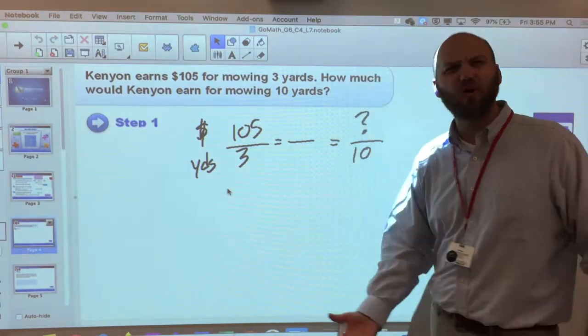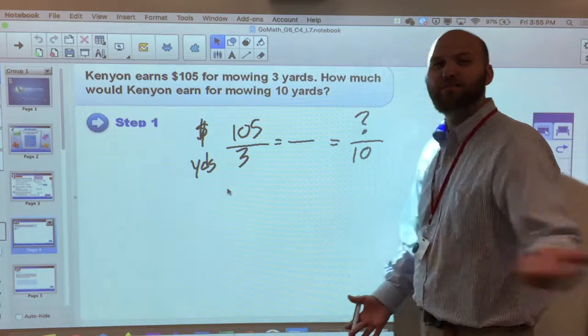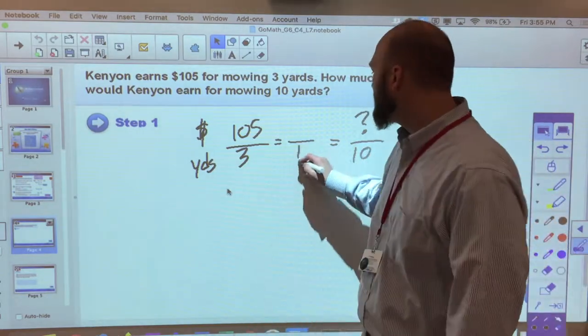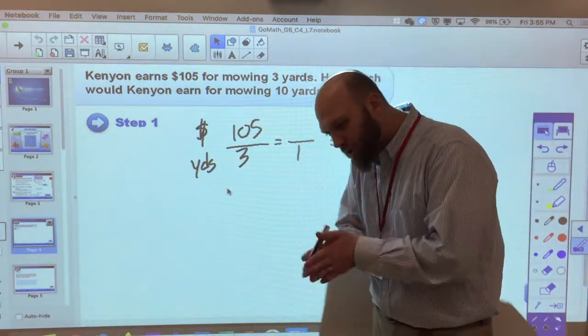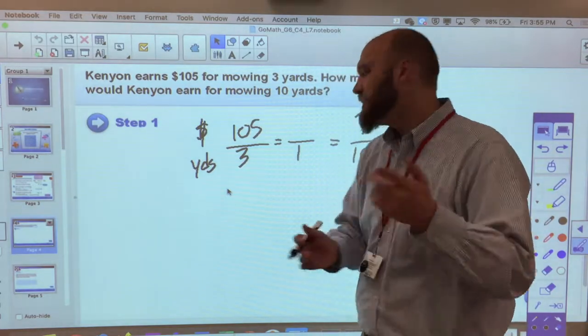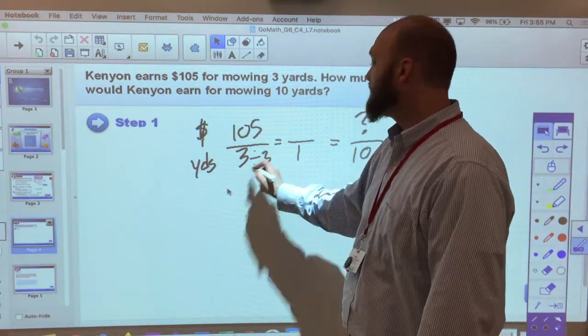So instead what if I took it down to a unit rate which is just one. How much does he get paid per yard? So if I know that I can easily find how much he gets paid for ten yards. So I take three and I want to go how much does he get paid per unit, per yard. So obviously to go from three to one I'm going to divide by three.